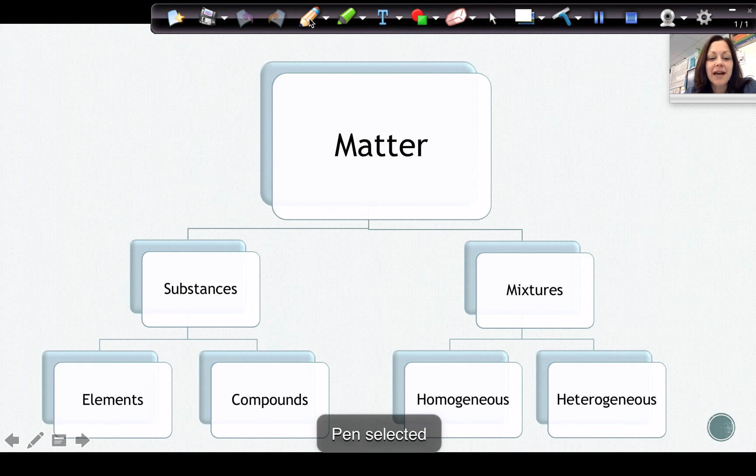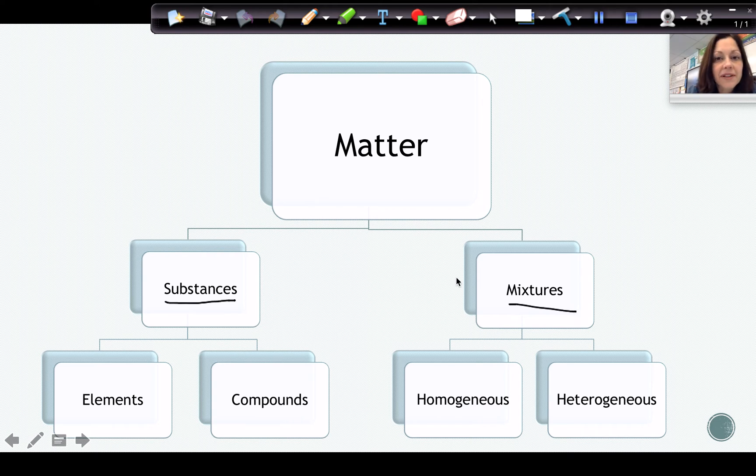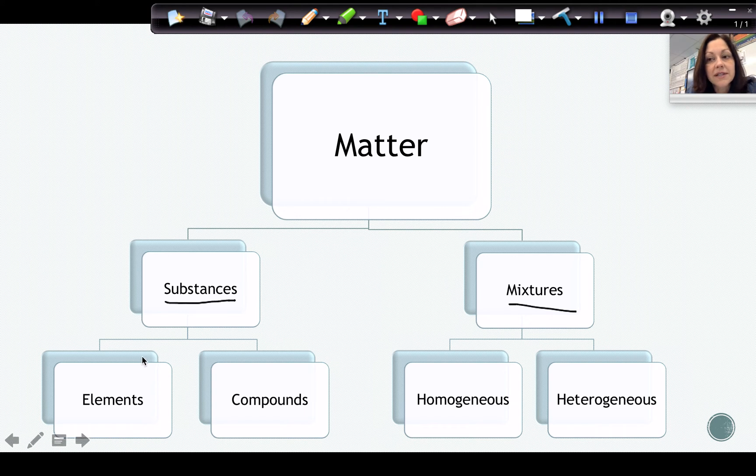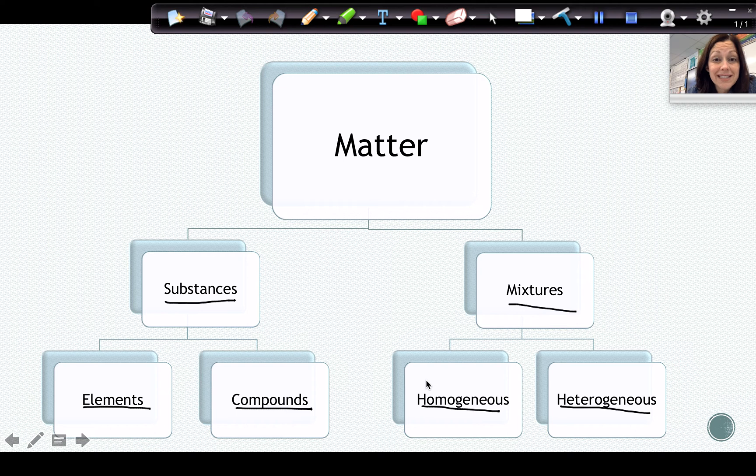The first thing that we want to talk about is that matter is divided into two main categories: substances and mixtures. Substances are going to be either elements or compounds, and mixtures can either be evenly mixed, which would be called homogeneous mixtures, or unevenly mixed. Remember, homogeneous mixtures are going to be the same throughout, whereas heterogeneous mixtures are going to have layers or clumps.